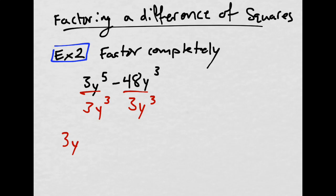You would write whatever you divide by on the outside of parentheses. And same third step, you fill in the parentheses with the division. 3 divided by 3 is 1, but you don't have to write the 1. And then y to the 5th divided by y cubed, that's just y squared.